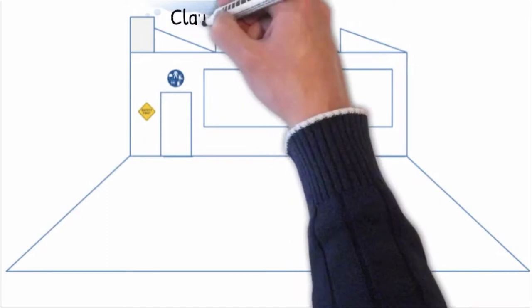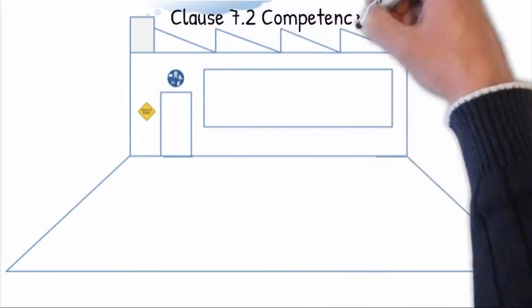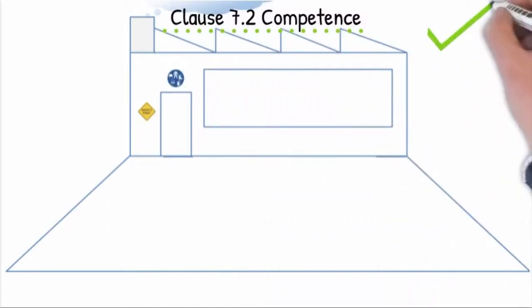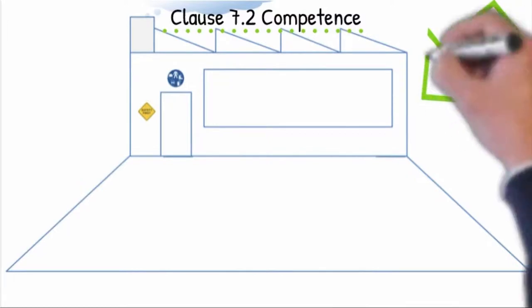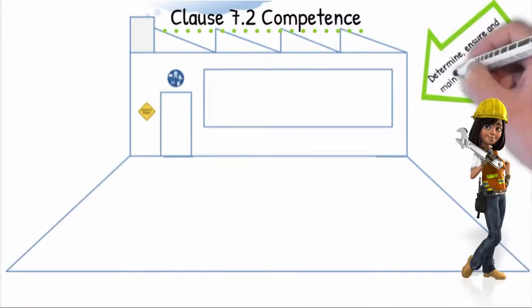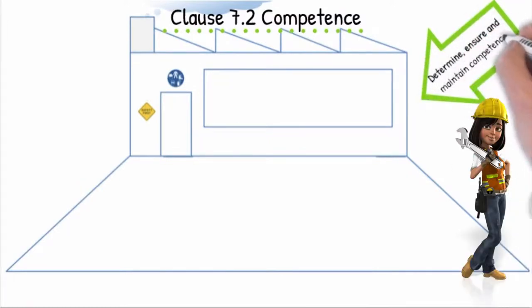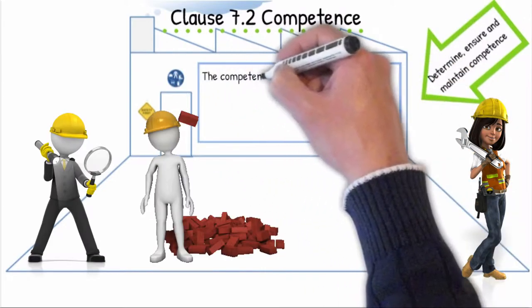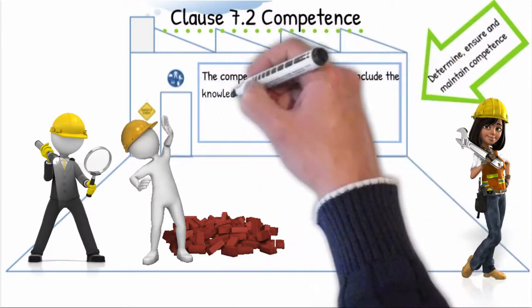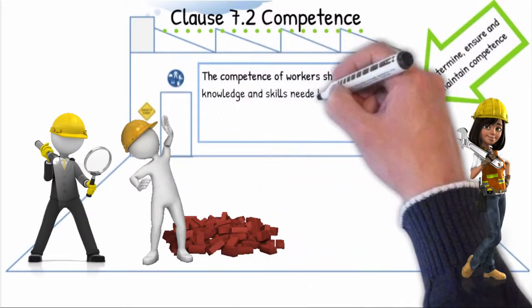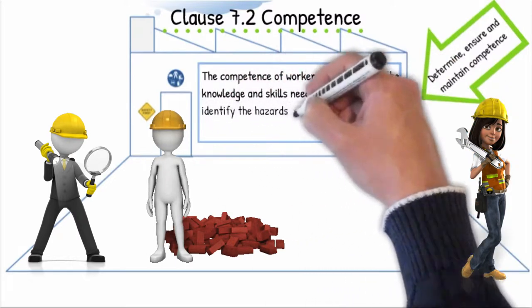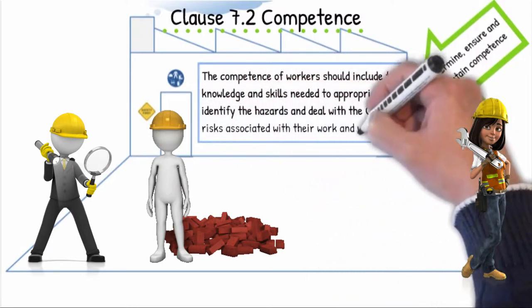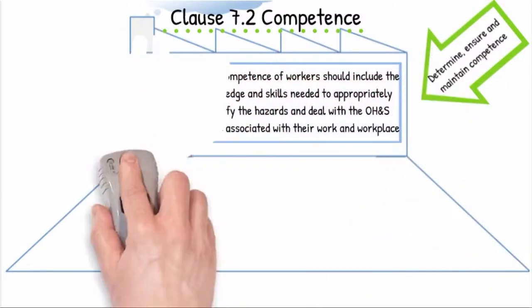Clause 7.2 Competence: The organization shall determine and retain the necessary competence of workers that affects or can affect its OHS performance. The competence of workers should include the knowledge and skills needed to appropriately identify the hazards and deal with the OHS risks associated with their work and workplace.